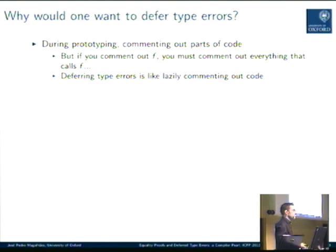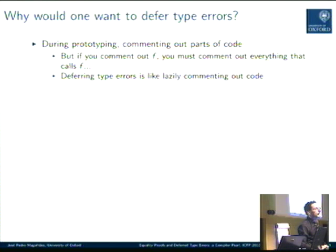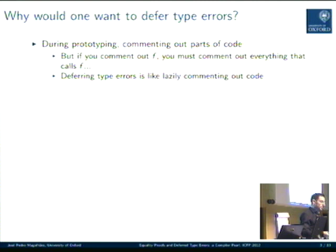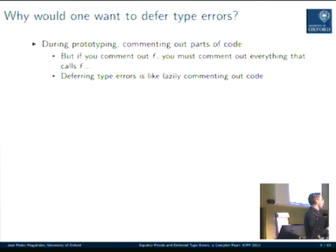Why would we want to do this? I often find myself just experimenting something in a text file and running it. Then I decide to change something, and it starts commenting out a function. But because this function is called from other places, I have to comment out other code, and so on — I end up spending more time commenting than actually programming. With deferred type errors, you can have a kind of lazy commenting-out of your code, because if you only run the part of your program that you know will work, you will not have problems with the type errors in the rest of the program.